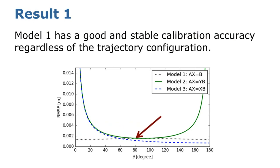Firstly, model 1 has a good and stable calibration accuracy regardless of the trajectory configuration. So use it if possible.